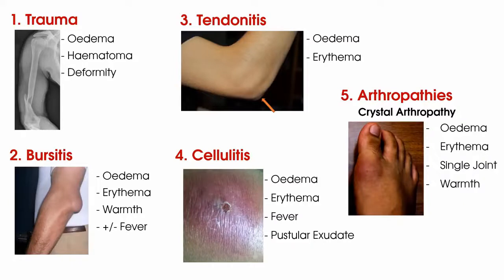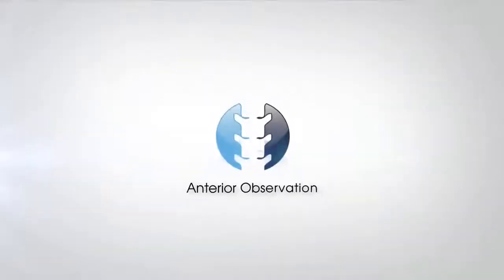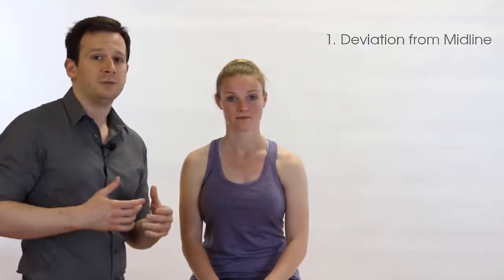So those are our inflammatory signs — let's get into the main video. Now we're going to look at observation of the shoulder joint in the anterior view. There are two key things to look at: one is a deviation from the midline and the other is the shoulder position.